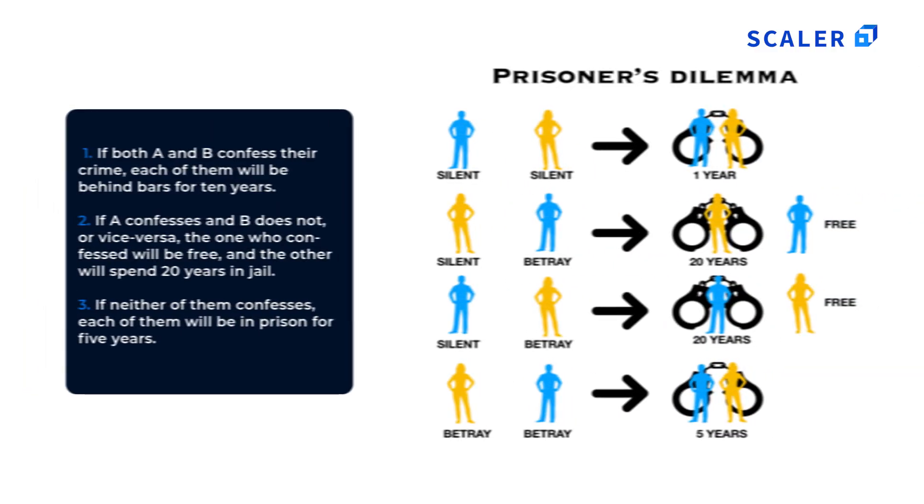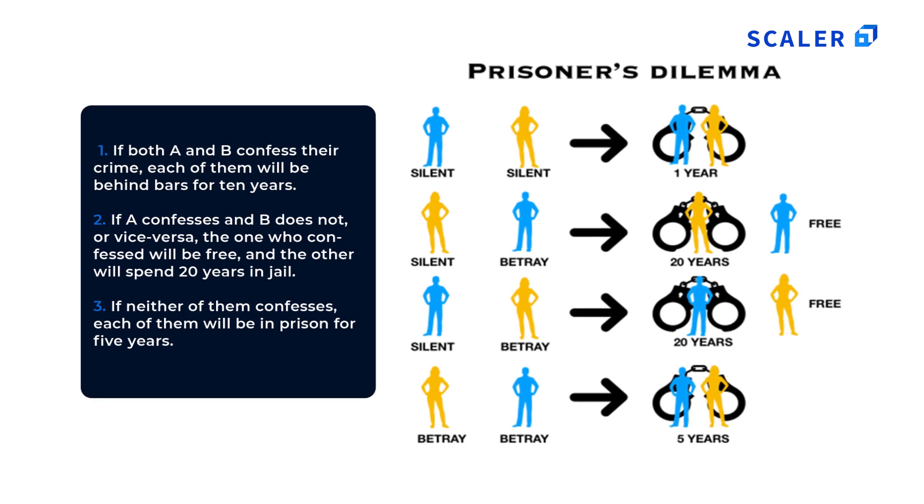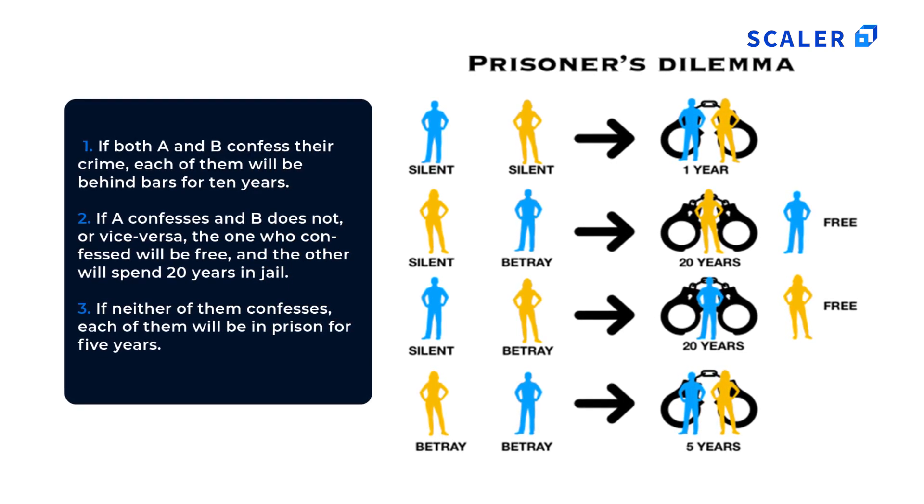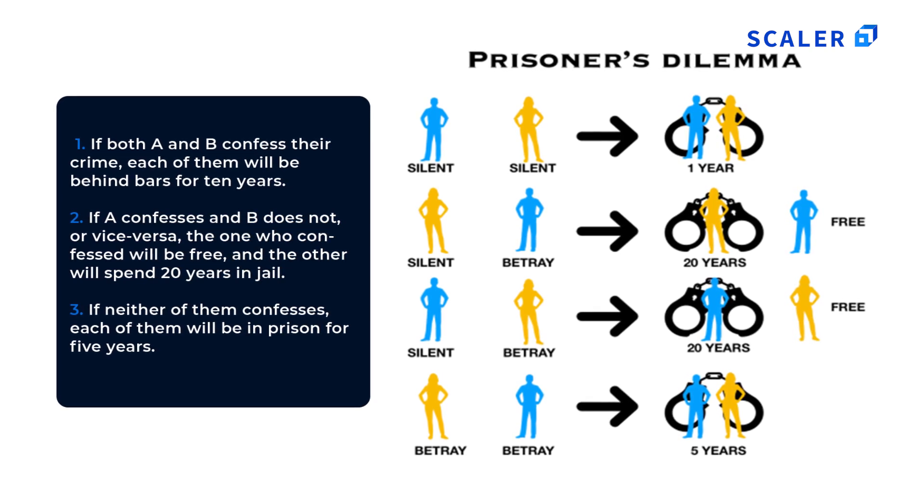Let's understand game theory with one of its classic examples: the Prisoner's Dilemma. There are two prisoners, A and B, captured for robbing a bank. The police does not have enough evidence to convict them but are sure they committed the crime. They put A and B in completely separate rooms and lay out the consequences. If both confess, each gets 10 years. If one confesses and the other does not, the one who confessed goes free and the other gets 20 years. If neither confesses, each gets 5 years.